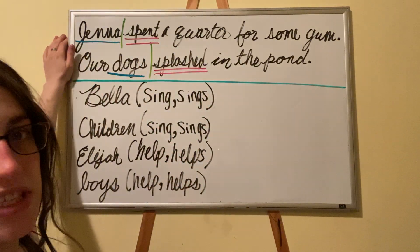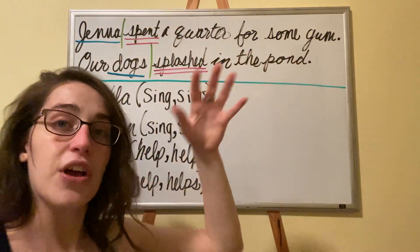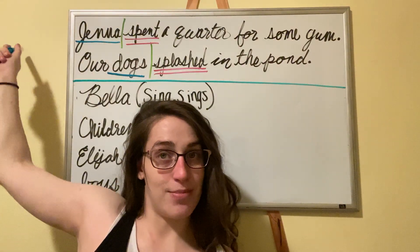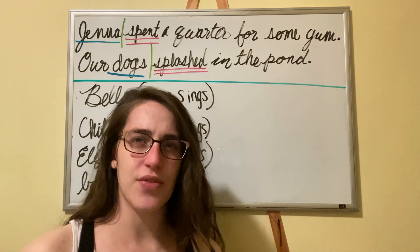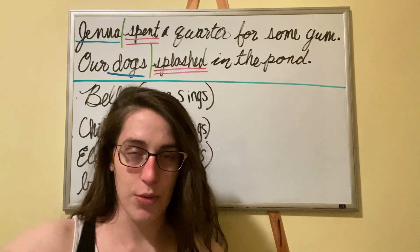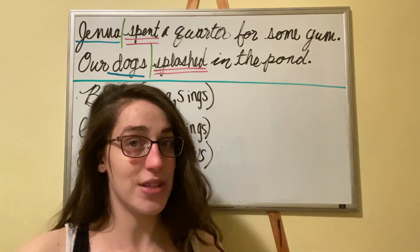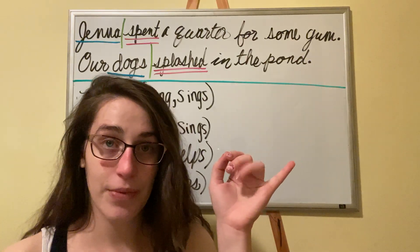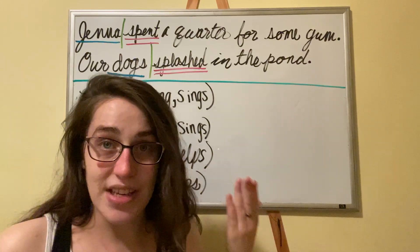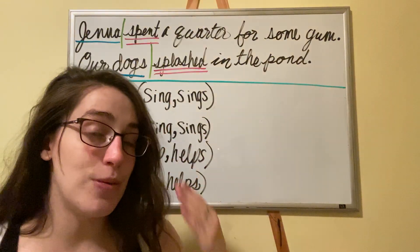If this sentence said my sister Jenna spent a quarter for some gum, the complete subject is my sister Jenna, but the simple subject — if you were going to make this sentence as small as possible — would be Jenna spent. Subject, verb. That's what a sentence needs: a capital letter, punctuation, a subject, and a verb, and it needs to make sense. Jenna spent — that could be a sentence. Just like dogs splashed could be a sentence.